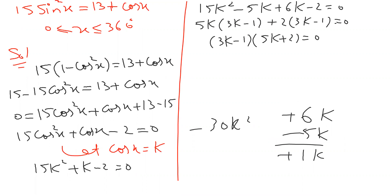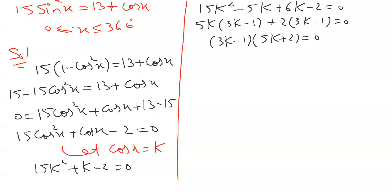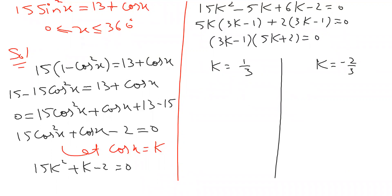Up till now nothing trigonometric — only algebra. Now I make a break. Setting each factor to zero: one gives K equals 1/3, and the other gives K equals — correction from student — minus 2 by 5. So cosine x equals 1/3 and cosine x equals minus 2 by 5.